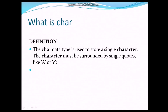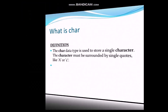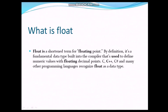Character: the character data type is used to store a single character. The character must be surrounded by single quotes, like 'A' or 'C'. The last one is float. Float is the shorter term for floating point. By definition, it's the fundamental data type built into the compiler that is used to define numeric values with a floating decimal point. C, C++, C#, and many other programming languages recognize float as a data type.